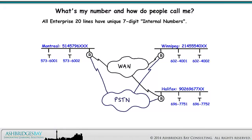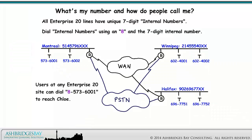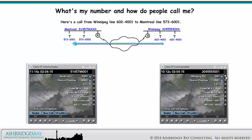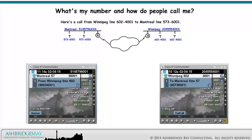All Enterprise 20 lines have unique 7-digit internal numbers. Dial internal numbers using an 8 and the 7-digit internal number. Users at any Enterprise 20 site can dial 8-573-6001 to reach Chloe. You can dial any line at any site using internal dialing. Caller ID shows the internal number prefixed with an 8, which lets you return the call from call lists.